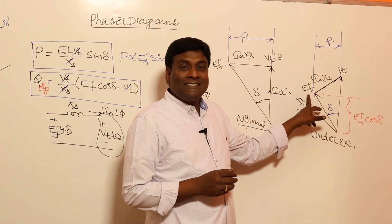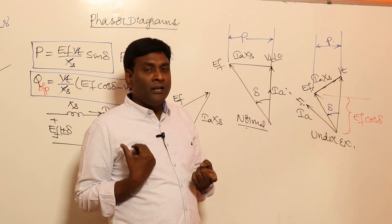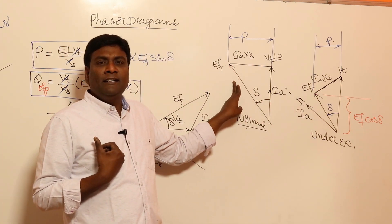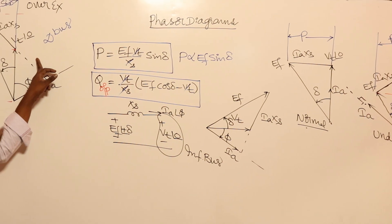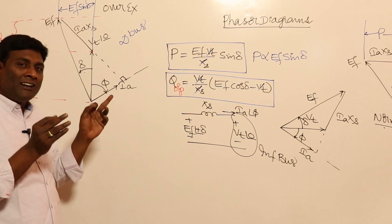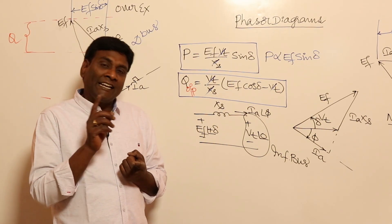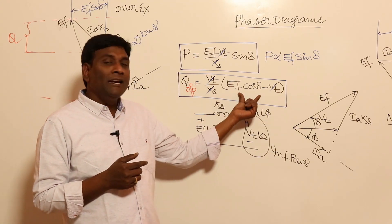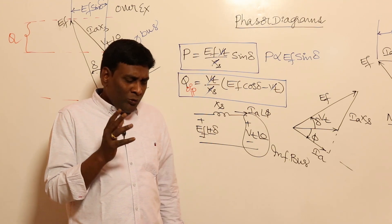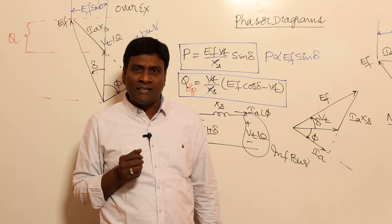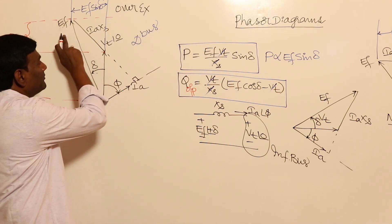So to summarize: in under-excited synchronous machine, it absorbs reactive power; at normal excitation, it neither delivers nor absorbs reactive power; and in over-excitation, it supplies reactive power. The fundamental takeaways are: Ef·sinδ gives information related to active power, and Ef·cosδ − Vt gives information about reactive power.